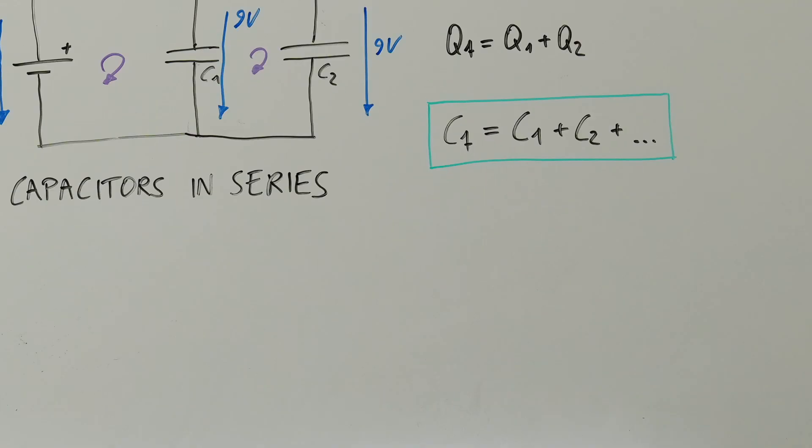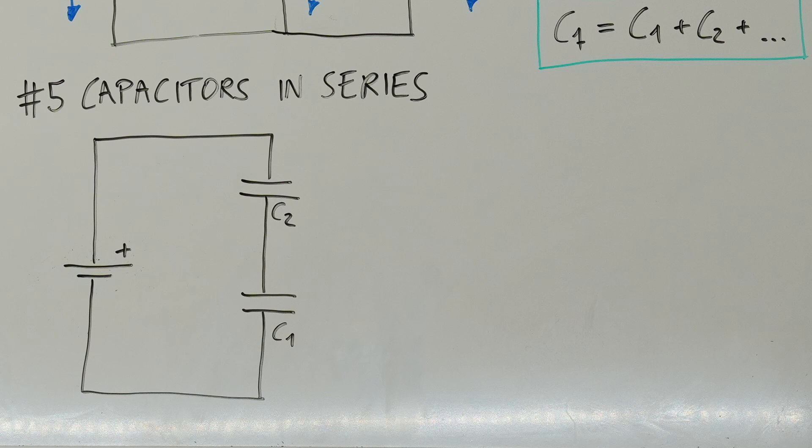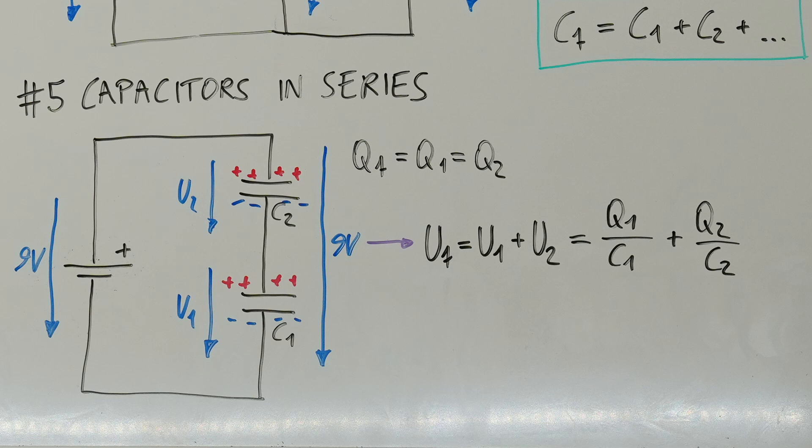If we add a second capacitor in series to the first, the electrons will distribute equally across all four plates. Consequentially, every plate and every individual capacitor will have the same charge. However, each individual capacitor will have a different voltage drop.